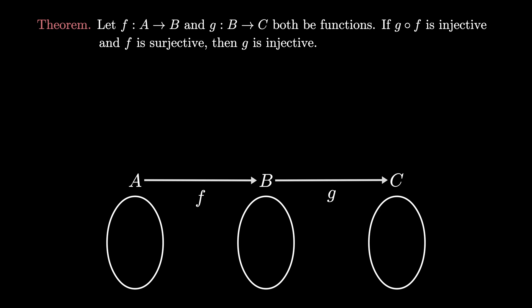Equipped with these two definitions, we're now ready to prove the theorem. We begin our proof by stating our assumptions that g∘f is injective and f is surjective. Next, because we want to prove that g is an injective function,